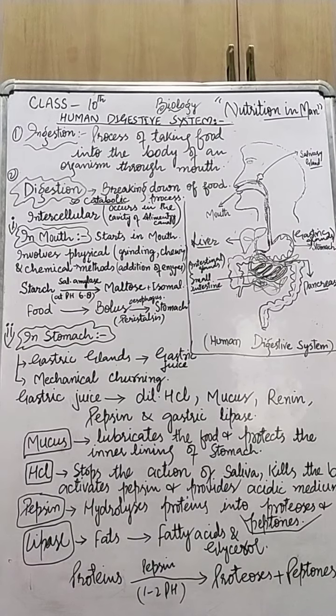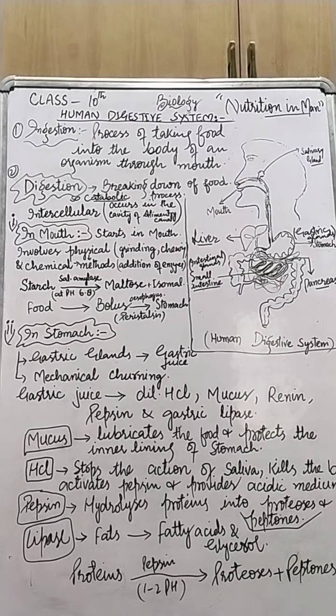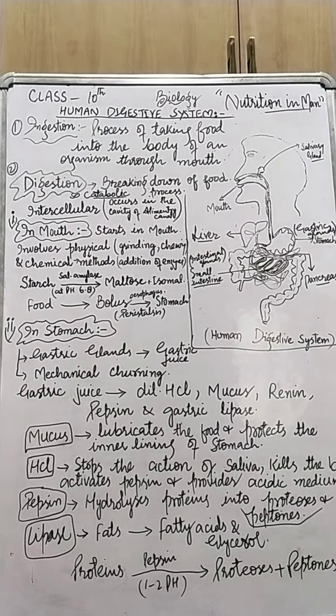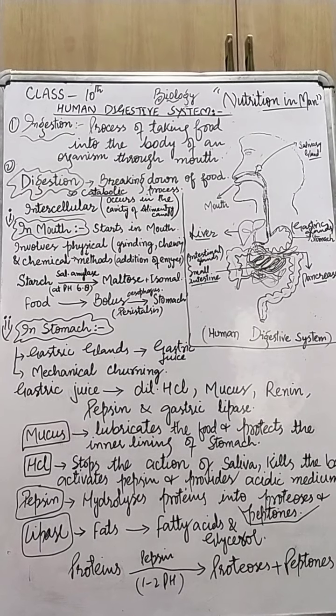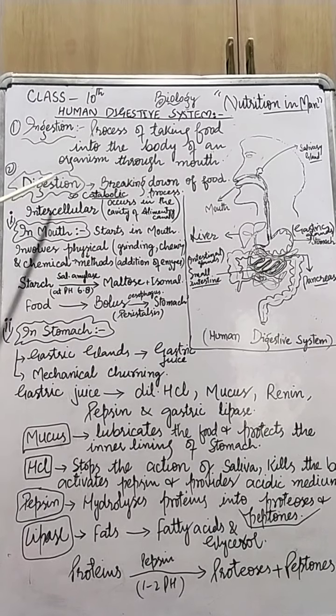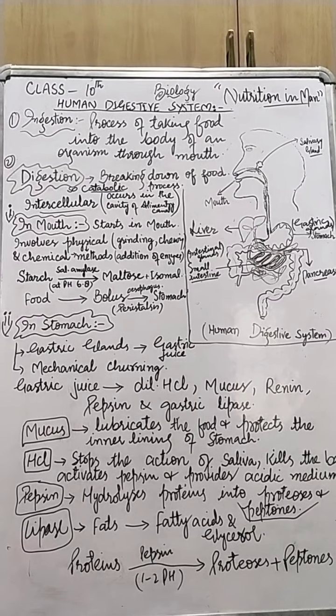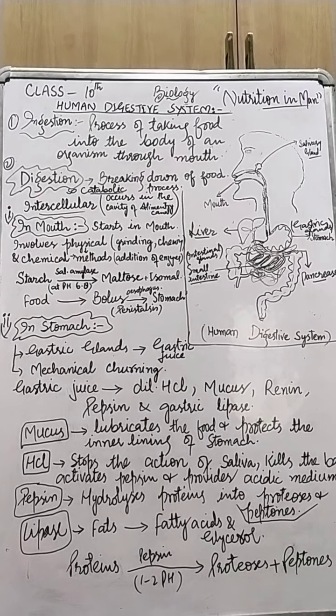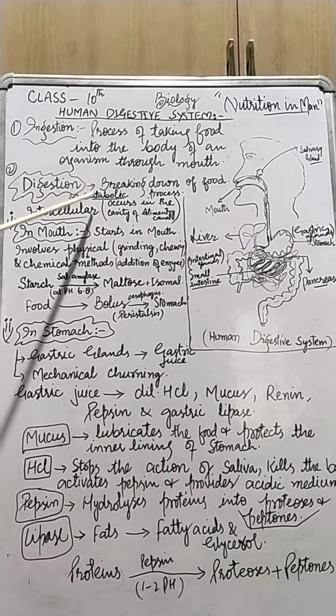By the process of digestion, they are broken down and changed into simple, small, soluble, diffusible and monomeric organic compounds like amino acids, monosugars, fatty acids, etc. This is the process of digestion. The digestion is the breaking down of food. It is a catabolic process, as the breaking down of food is a catabolic process.